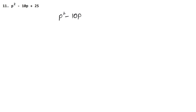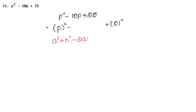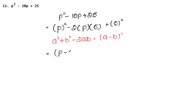Factorize p² - 10p + 25. Now p² is (p) whole square, and 25 is (5) whole square, but there is a minus sign here. So we use the formula a² - 2ab + b² = (a - b)². Here a is p and b is 5. Check: 2 × p × 5 = 10p with the minus sign — that matches. So the formula gives us (a - b)² = (p - 5) whole square as the answer.